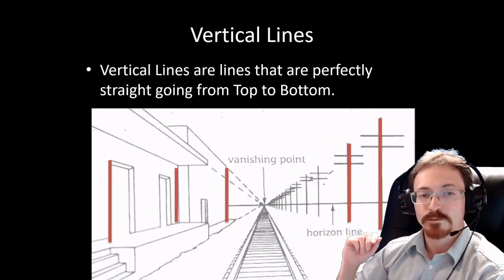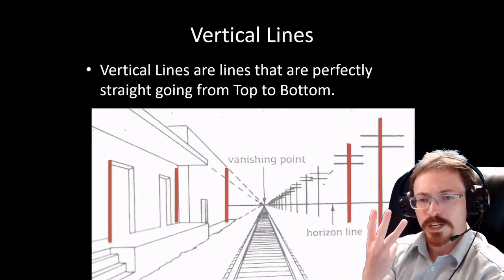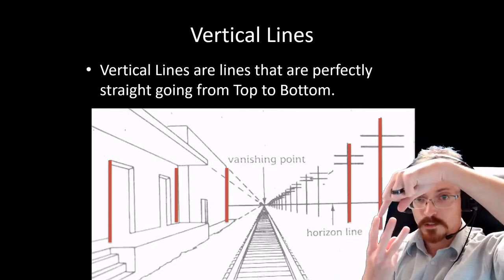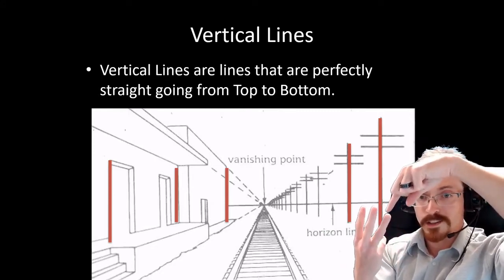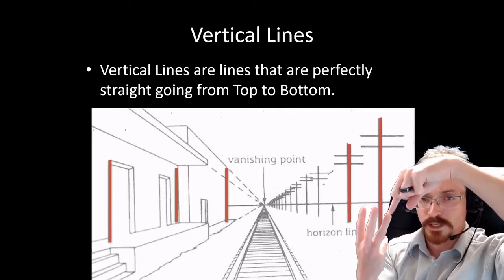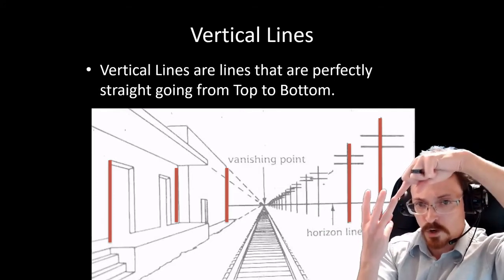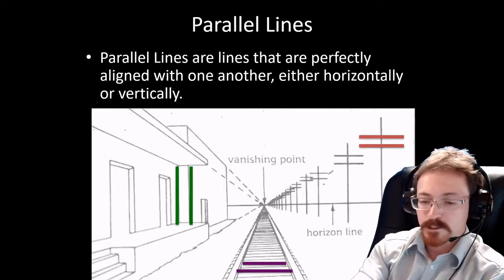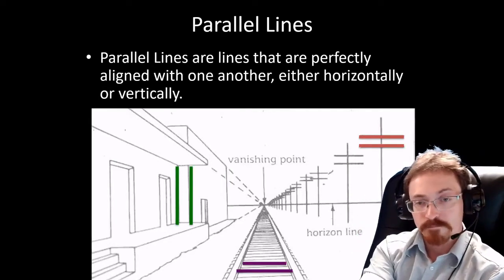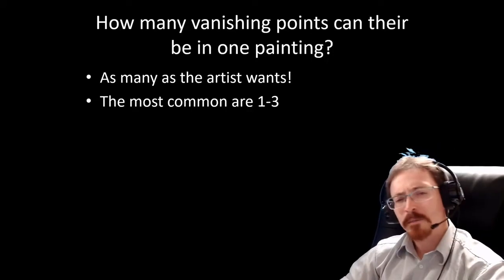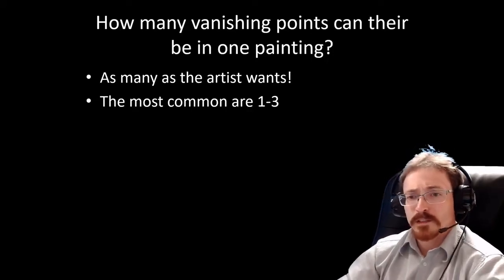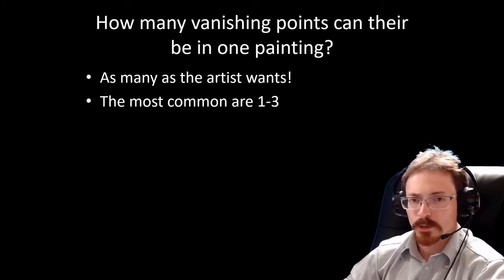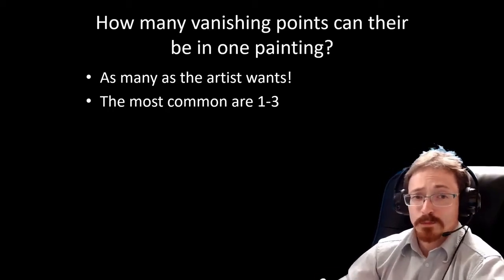In a one-point perspective drawing, there are only three types of lines: vertical lines, horizontal lines, and lines that go to the vanishing point. If it is a diagonal line, it has to go to the vanishing point. Now, how many vanishing points can there be in an artwork? Artworks typically have one to three, but you can actually have as many vanishing points as you want.